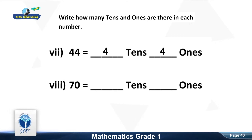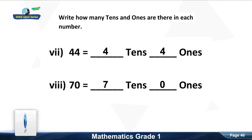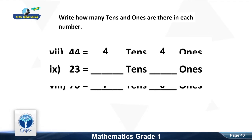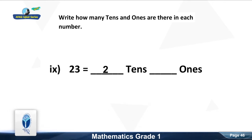How many tens in seventy? Good, seven tens. Ones? Good, zero ones. How many tens in twenty-three? Good, two tens. Ones? Good, three ones.